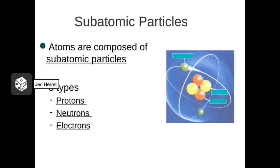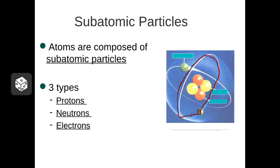If you took an atom and looked inside it, you'd find that it's made of even tinier particles known as subatomic particles — things we call protons, neutrons, and electrons. Over here on the right we have the classic model of an atom, called the Bohr model. It's actually a little bit outdated — it makes these particles look like they're on little tracks going around and around forever, which isn't entirely accurate. But this model is a good jumping-off place for understanding atomic structure.